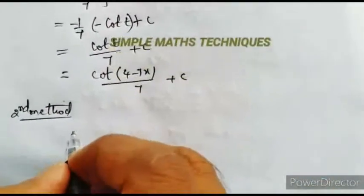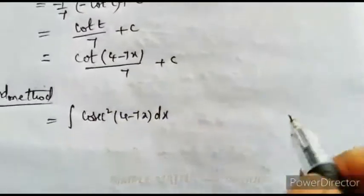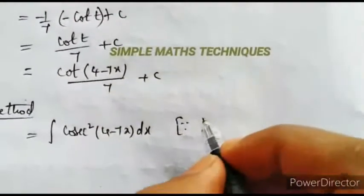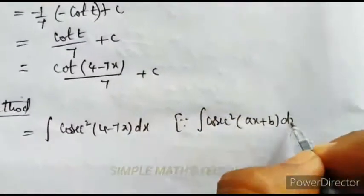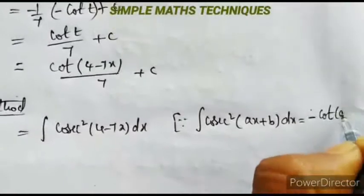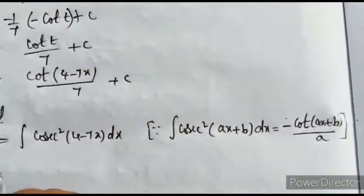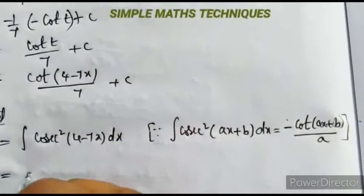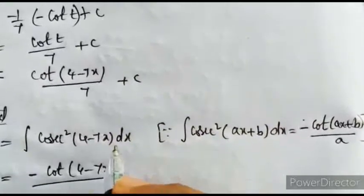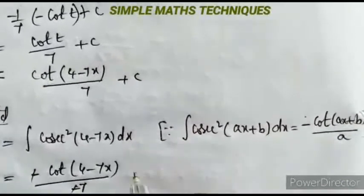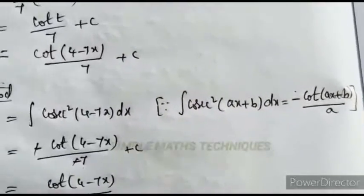The second method: given integration of csc²(4-7x) dx, using the direct formula — integration of csc²(ax+b) dx = -cot(ax+b)/a plus c. Here a = -7, so minus cot(4-7x) divided by -7. The negatives cancel, giving cot(4-7x)/7 plus c. This is the solution.